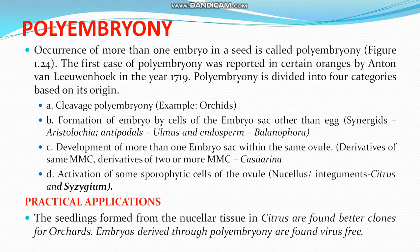The next topic is polyembryony: the occurrence of more than one embryo in a seed. Normally one seed contains one embryo, but when many embryos are present it is known as polyembryony. The first case of polyembryony was reported in citrus orange by Anton van Leeuwenhoek in the year 1719.